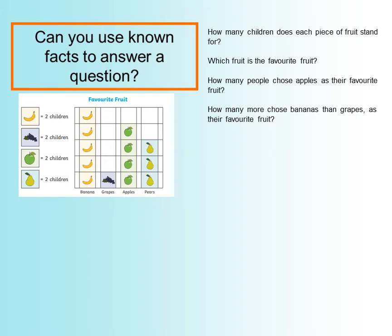This is where it gets a little bit tricky. How many more children chose bananas than grapes as their favourite fruit? From the graph there is one picture of grapes, which represents two children, and there are five bananas making 10 children. So if we do 10 take away 2, that gives us 8 — there are eight more children who chose bananas than grapes as their favourite fruit.